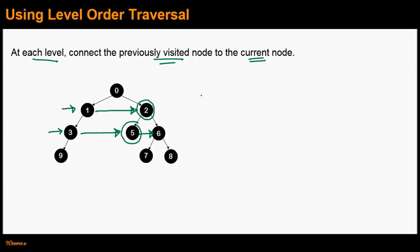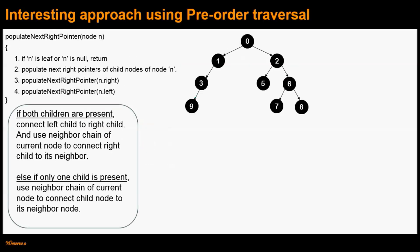Let's look at an interesting approach which makes use of pre-order traversal for solving the same problem. In this algorithm, the subroutine 'populate next right pointer' is a recursive subroutine which takes argument as node n. The first step is: if n is a leaf node or null node, then simply return. This is the base case for this recursion.